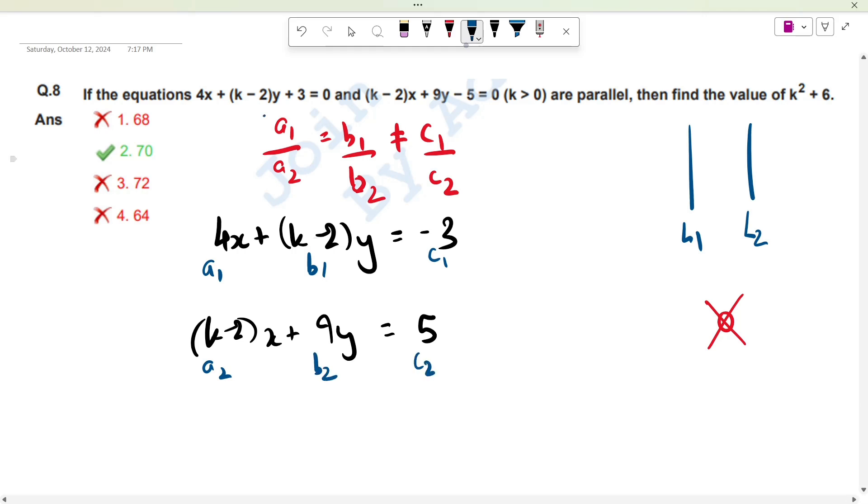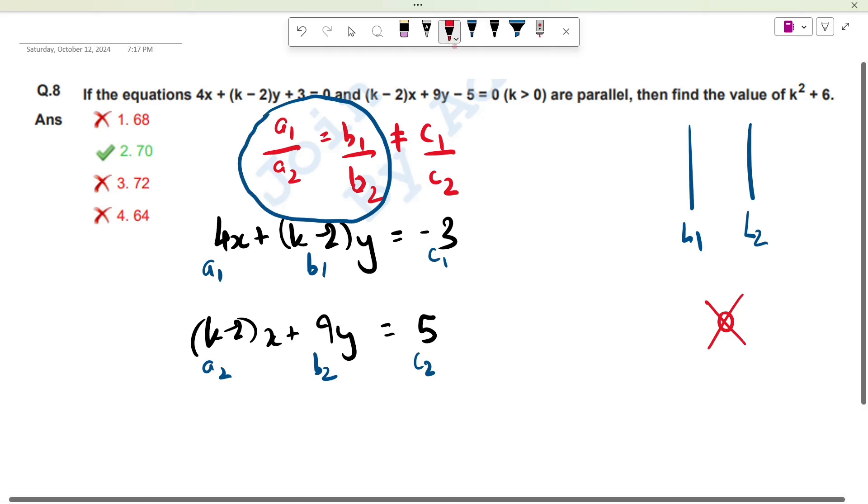Now we know that A1 upon A2 is equal to B1 upon B2. Let's solve this equation. A1 is equal to 4, A2 is equal to K minus 2. And B1 is K minus 2, and here is 9.